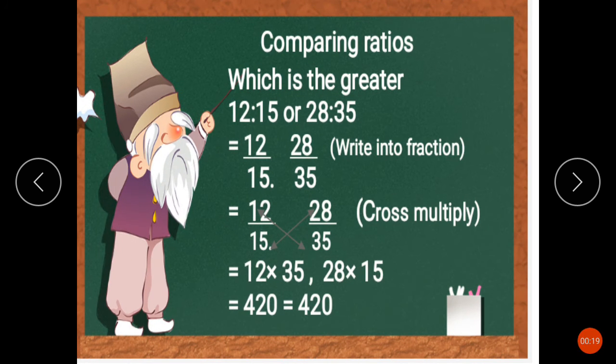Question number 3 is comparing ratios. We need to determine which is the greater ratio: 12:15 or 28:35. Here we will compare which is the greater ratio.